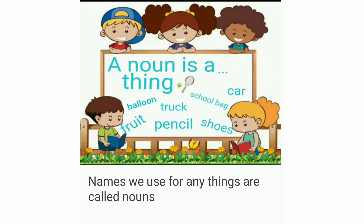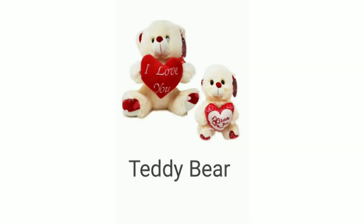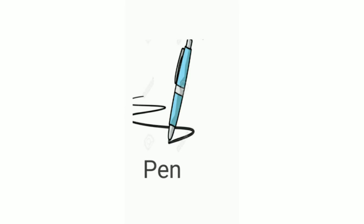Nouns are also names of things. Things are non-living things like balloon, fruit, truck, pencil, shoes, car, etc. Any names we use for things are also categorized under nouns. For example, that fluffy toy with the look of a bear we call teddy bear — so teddy bear is a noun. That flower with thorns and a sweet smell we call a rose — so rose is a noun. What we write with ink we call a pen — so pen is a naming word and therefore a noun.